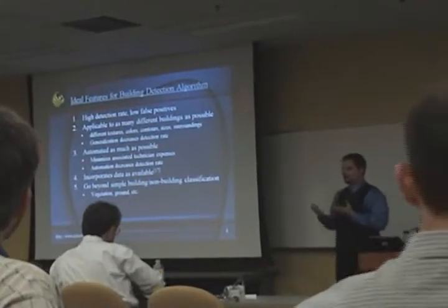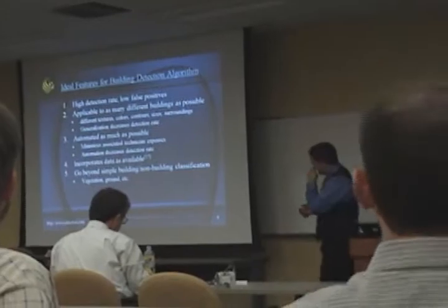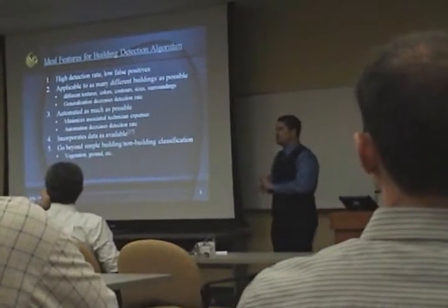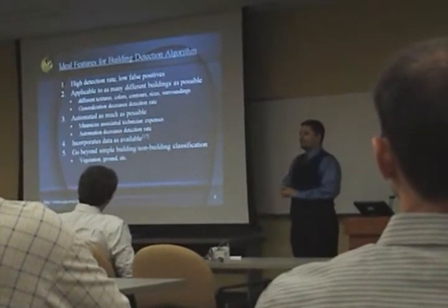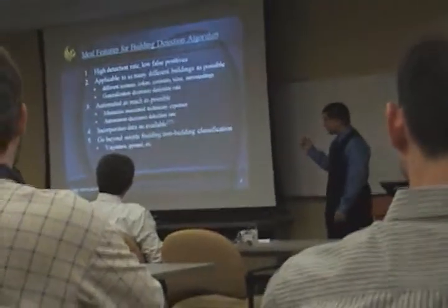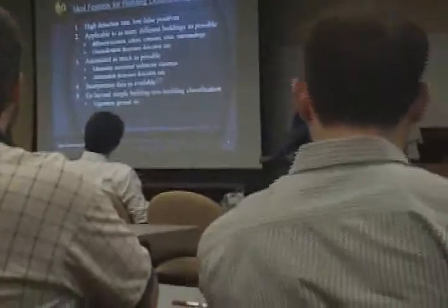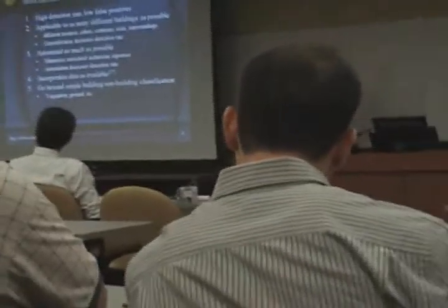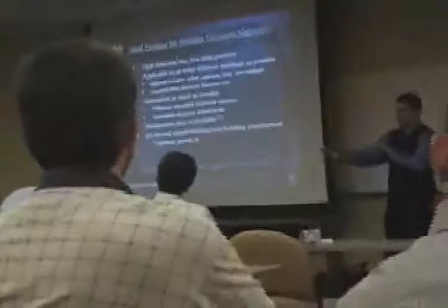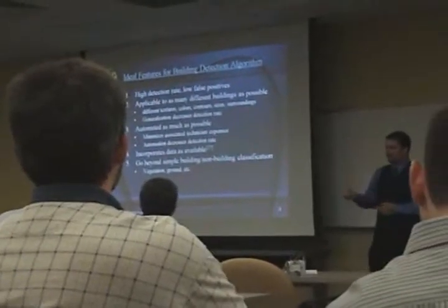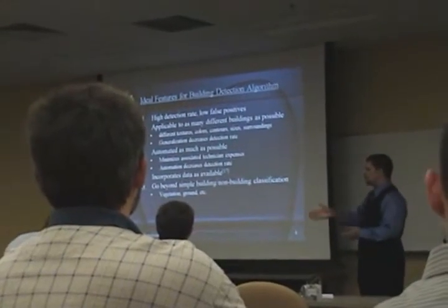How do we ideally want building detection algorithms to work? We want to avoid overly limiting assumptions, because sometimes the more automated it is, the more it impacts detection rate. Meijer, in his building detection review paper, brings up an interesting point: we should incorporate the data that's available. Don't say 'I require everything.' It would be better to say, if this is available, I can do this; if that is available, I can do that; if both are available, I can do something better. Incorporate whatever data is available.